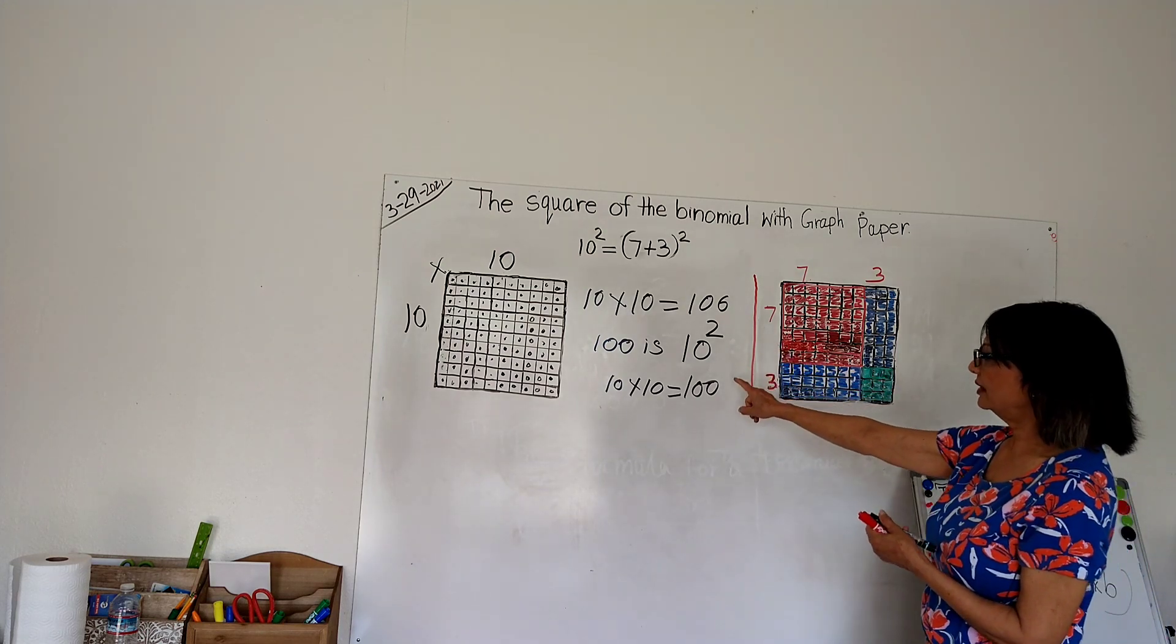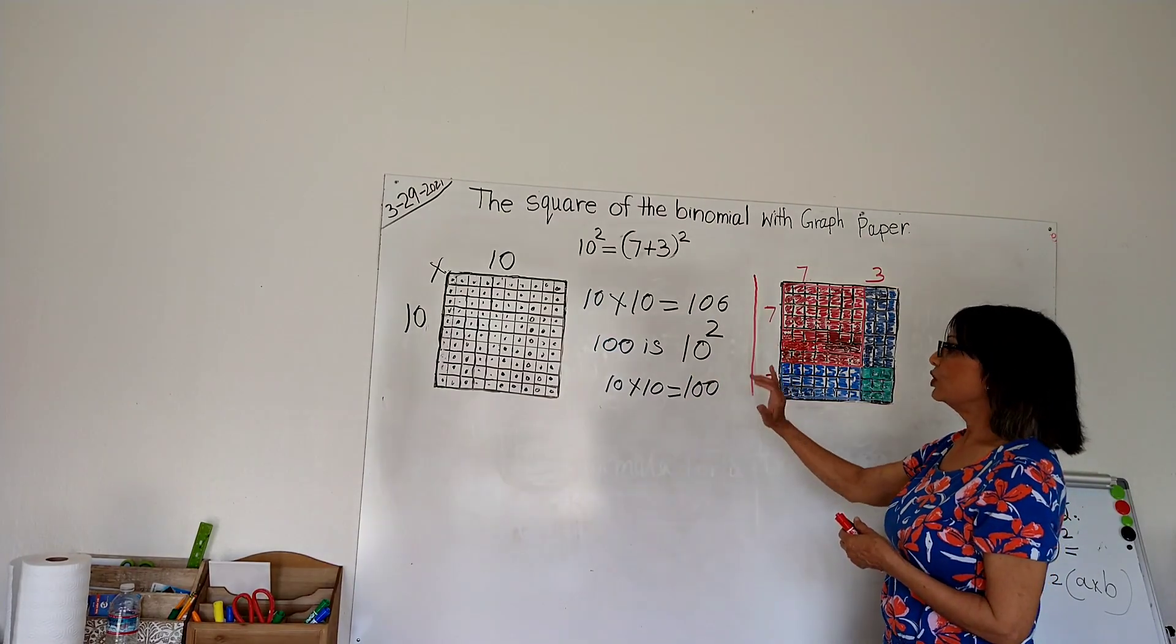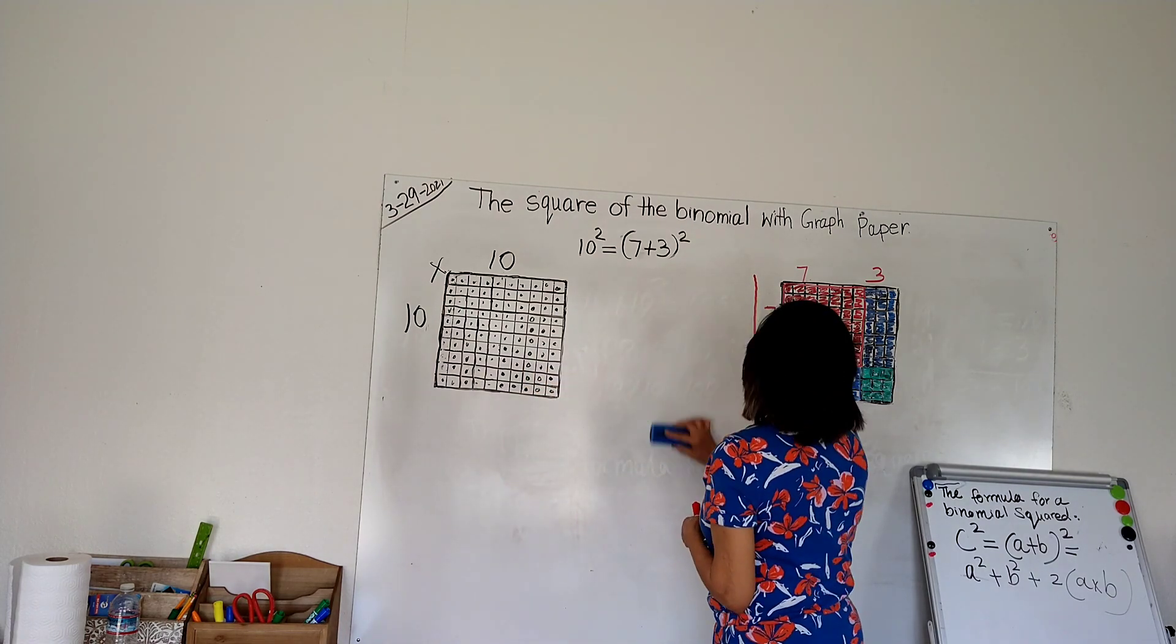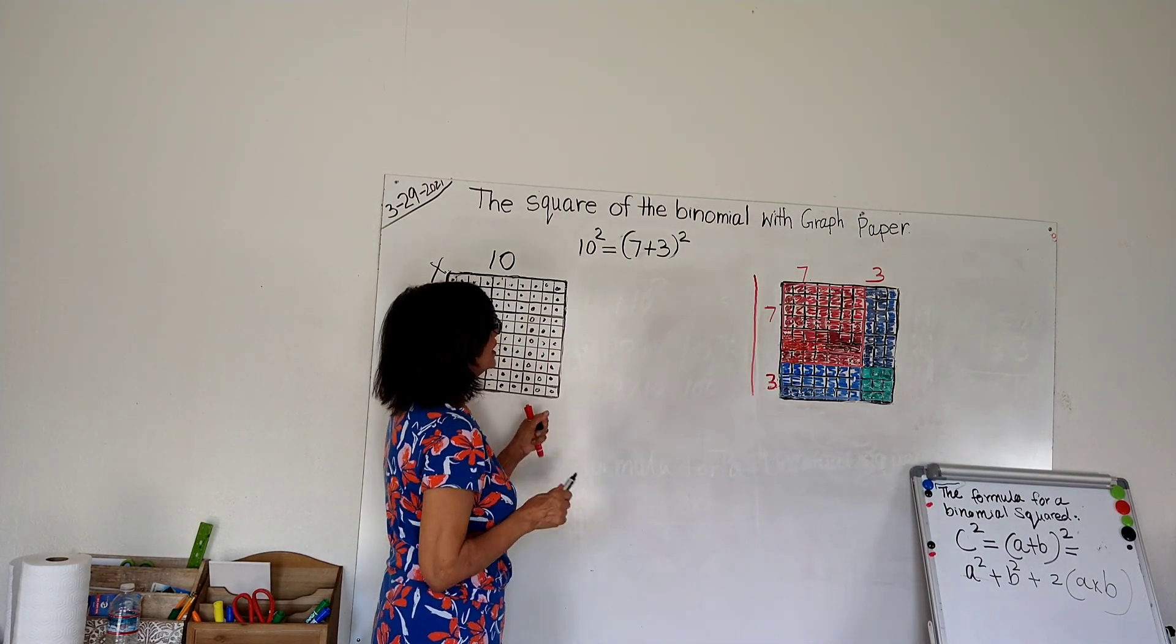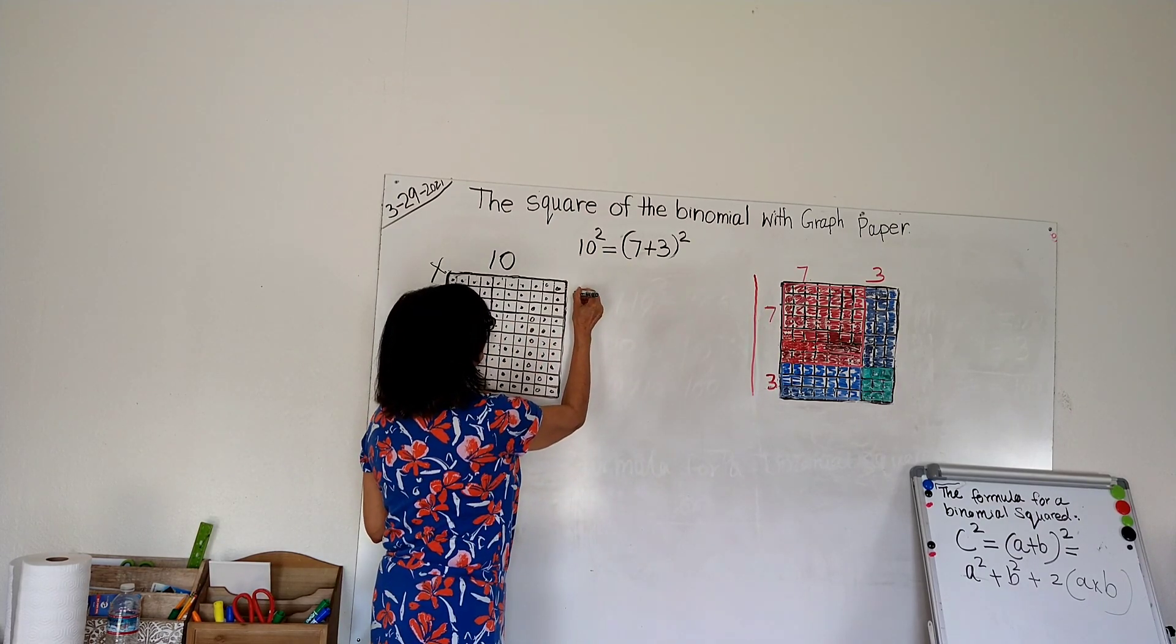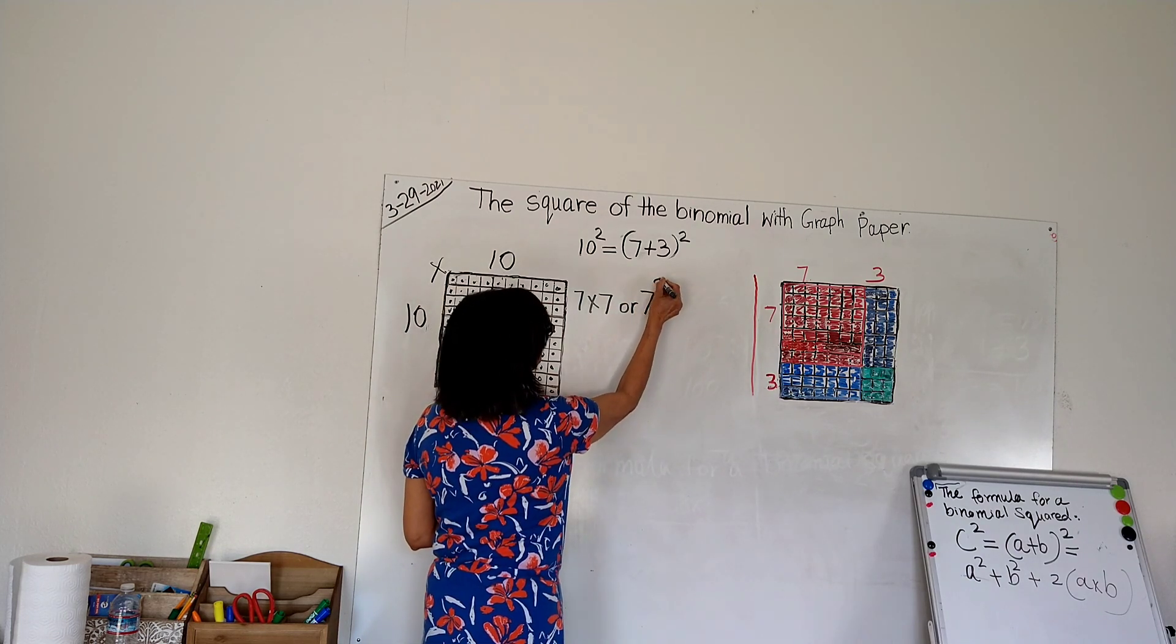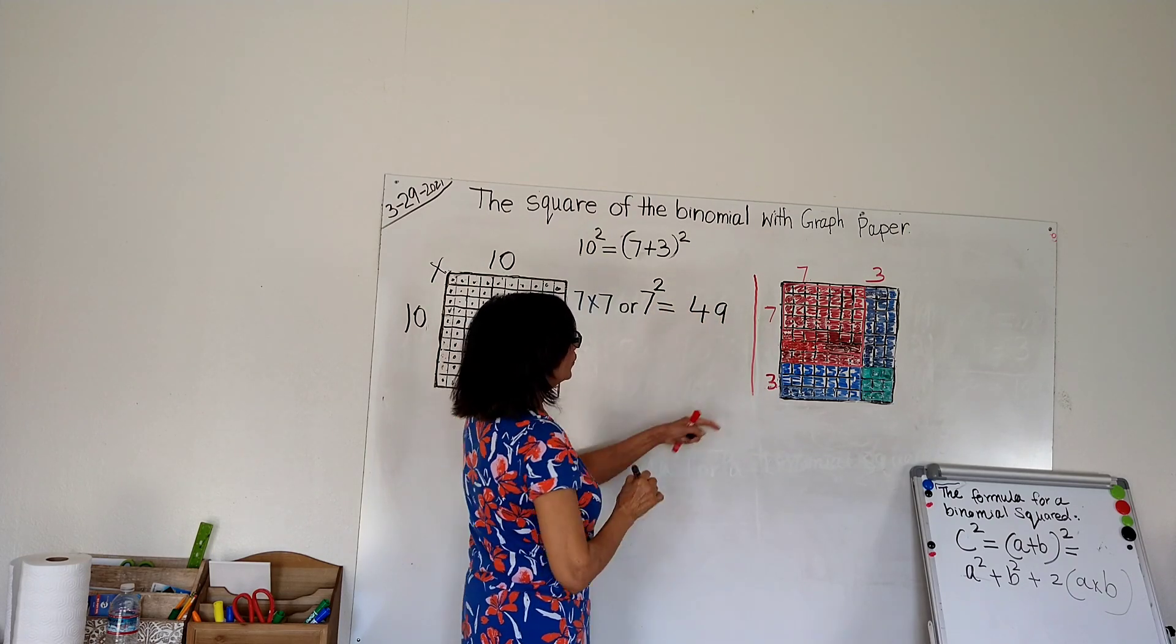So let's do math here. Since we are done with that part, I am going to erase it. We have here 7 times 7, or 7 squared, equals 49.